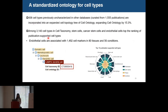Among the 3,000 cell types in Cell Taxonomy, stem cells, cancer stem cells, and endothelial cells top the ranking of most published cell types. For example, endothelial cells are associated with about 1,400 cell markers. Typically, when we annotate cell types, we use only one or two cell markers instead of 1,000. So it is important to narrow down from 1,000 cell markers to one or two important, robust, high-quality markers.